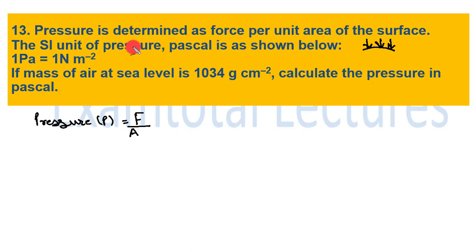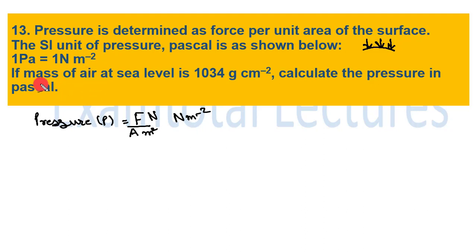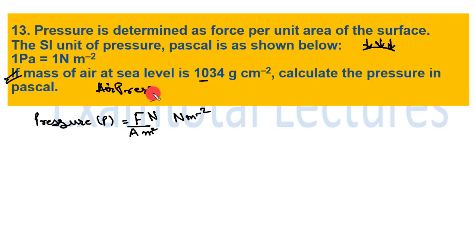The unit of pressure is pascal, which equals newton per meter square — newton is the unit of force and meter square is the unit of area. The question then asks: if the mass of air at sea level is 1034 g cm⁻², calculate the pressure in pascals.